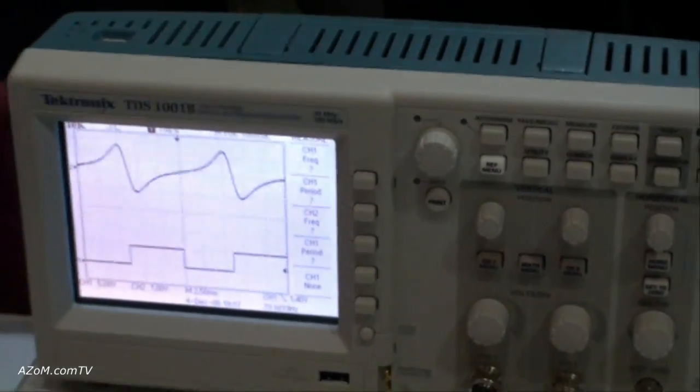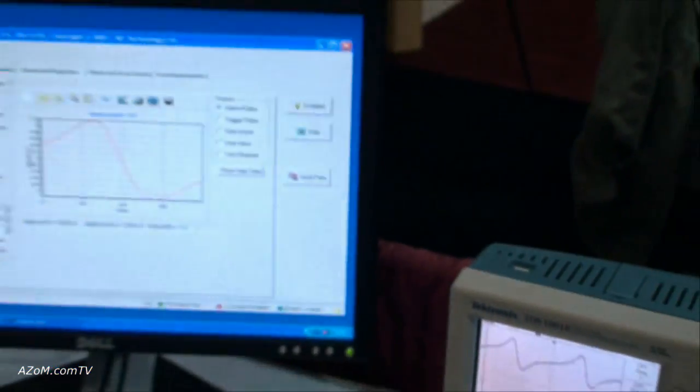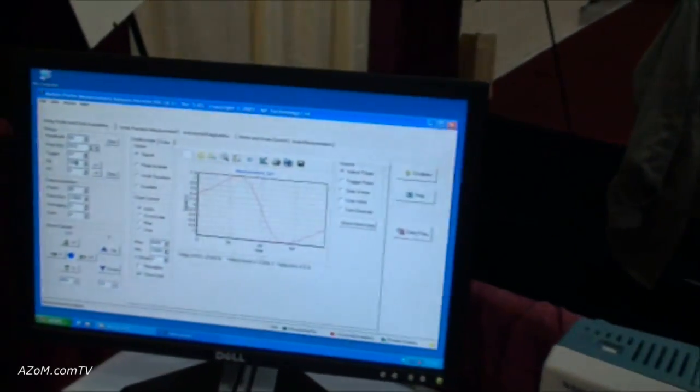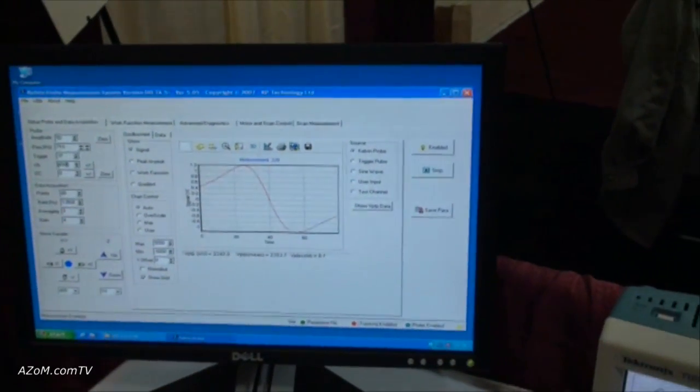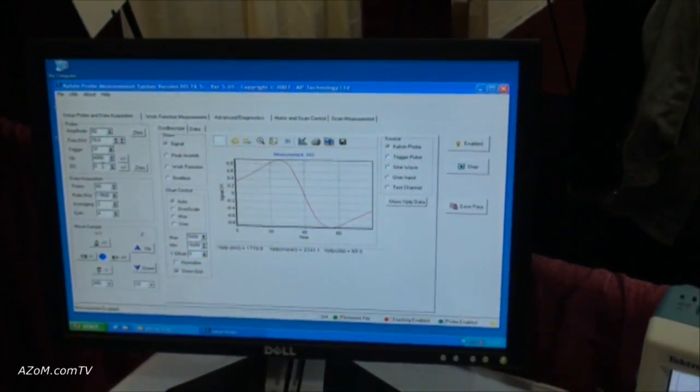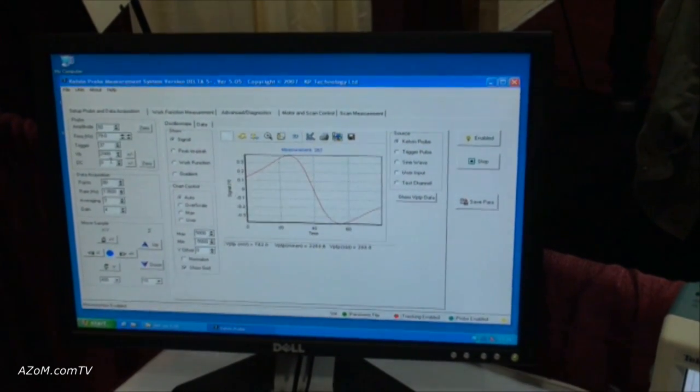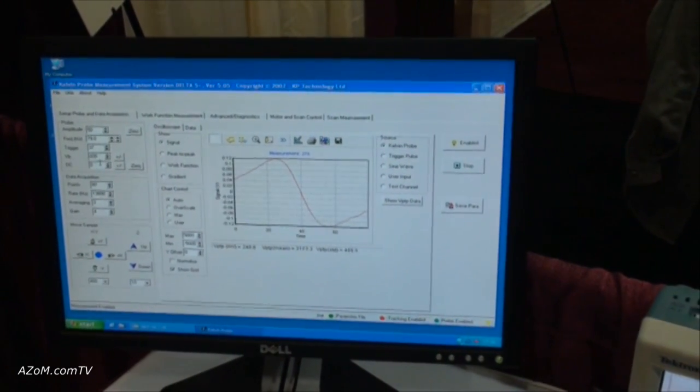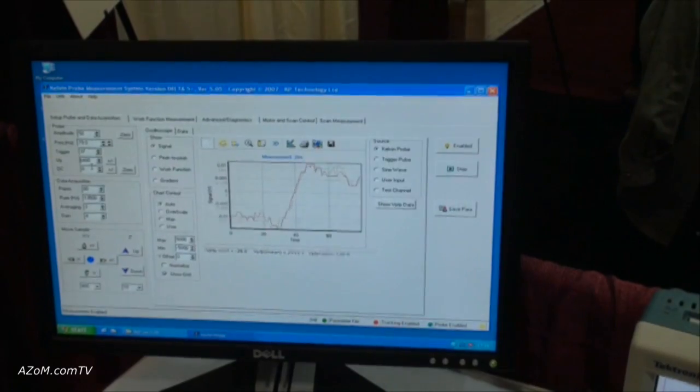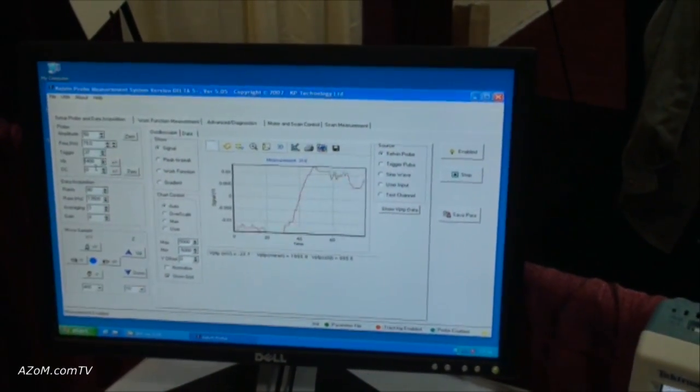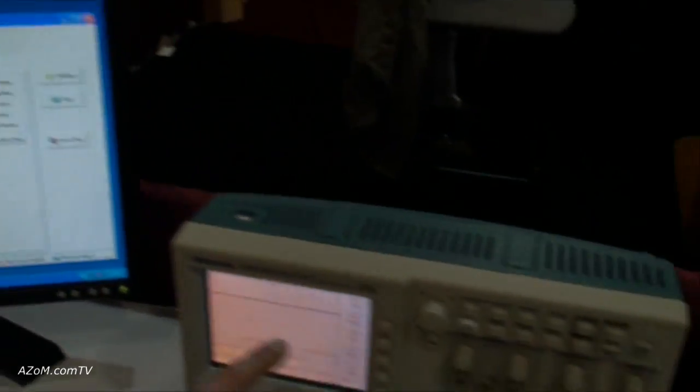We control the tip potential and the Kelvin probe measurement. If I control the tip potential, I can make the energy of the tip and the surface the same, and at that point I'll get zero signal. That's called the null field. As you can see, I've got a little bit of noise at null, but I've got a flat line on the oscilloscope.